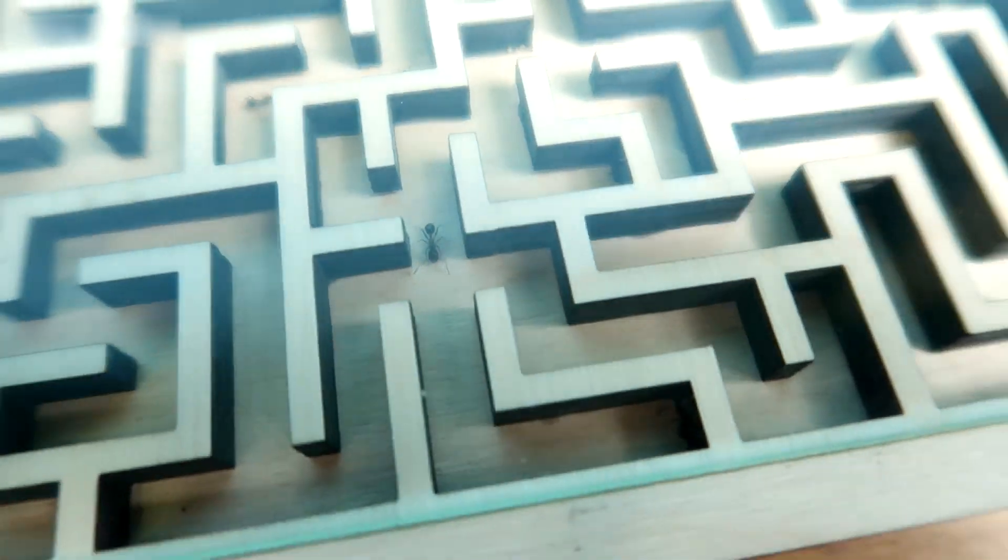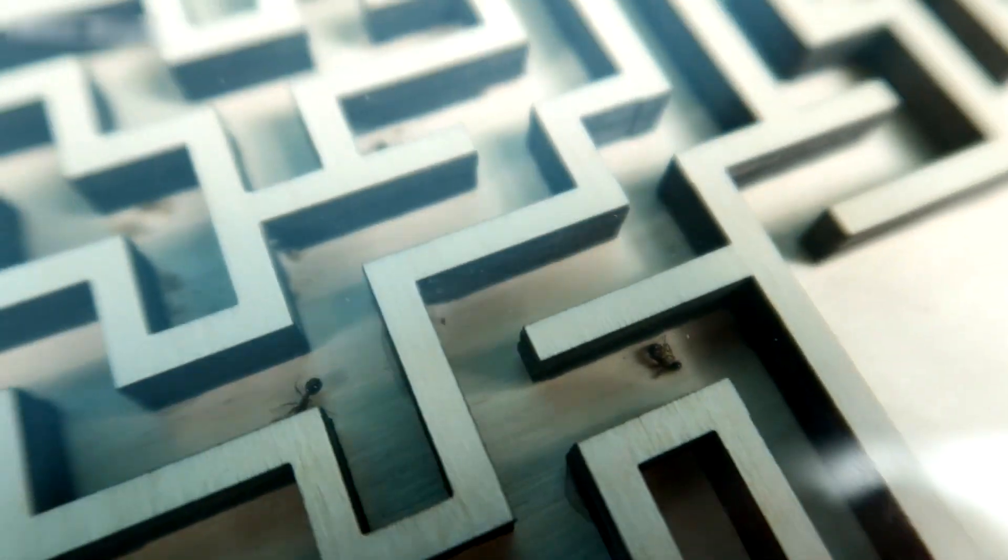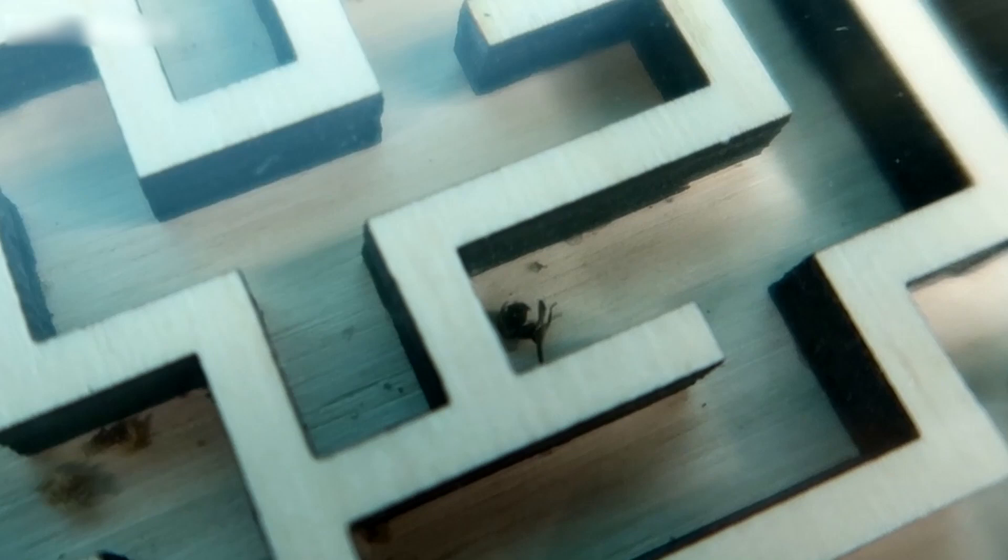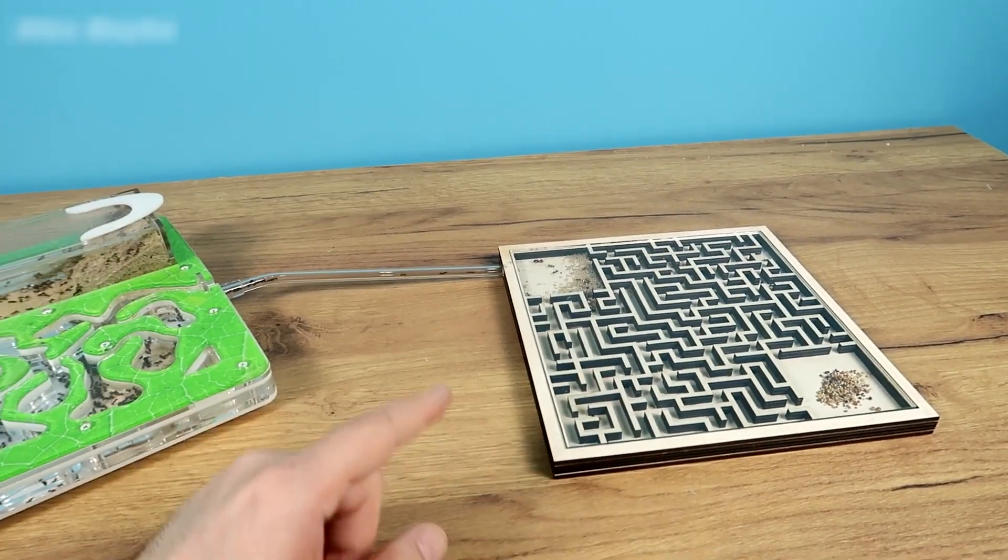Initially, I couldn't fathom the cause or the sequence of events. My initial thought was that perhaps some ants couldn't find their way out and perished due to hunger or thirst. But then, it all made sense.